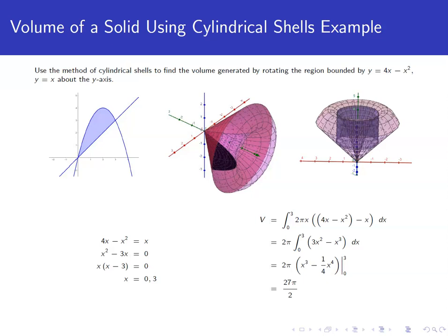So we've got the region bounded by the curves y equals 4x minus x squared and y equals x. We're going to rotate this about the y-axis, and we're asked to do this by shells.